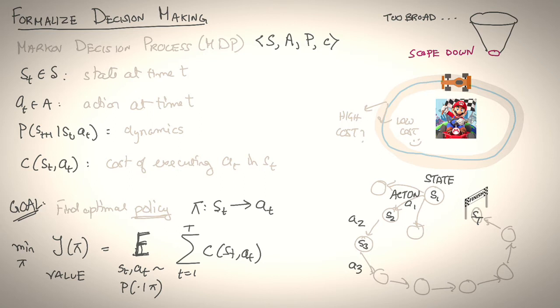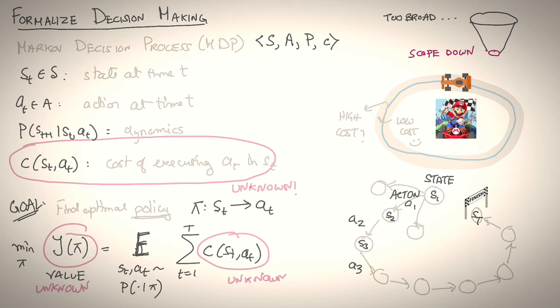Think of the one-step cost, C(ST, AT). Are they really known to us? I mean, do we really know how much weight to put on minimizing lap time versus not falling off the track, versus not colliding into things? We don't. They're sort of implicitly contained in the mind of Mario. And if you don't know these costs, we certainly don't know the value J(pi), and if you don't know the value J(pi), how is it that we can optimize for a policy pi?